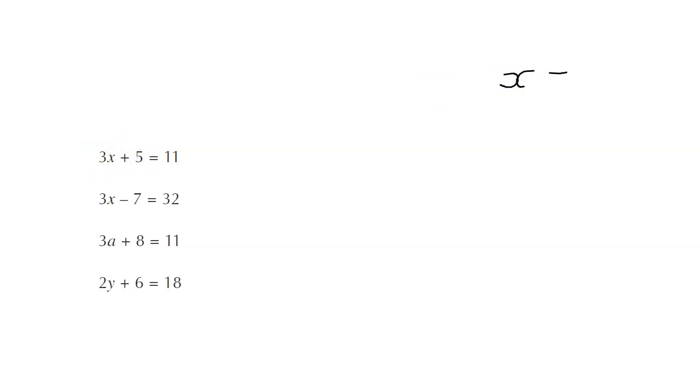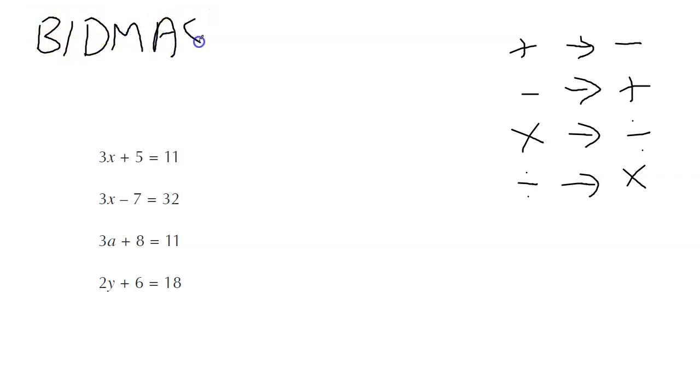We're still going to use our opposites from before, where plus is going to turn into a minus, minus is going to turn into a plus, times is going to turn into a divide, and divide is going to turn into a times. But because there's two things, we've got to work out which one do we do first. And for that, we have to think about the order of operations, BIDMAS. We're not trying to work out this answer 11, we're trying to work backwards to find x. So we're going to work backwards through BIDMAS. As we undo things, as we do the opposite, we're working the opposite way through BIDMAS.